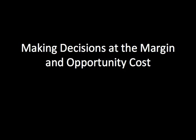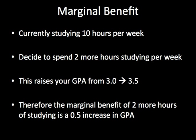Let's say that currently you're studying 10 hours per week and that you decide to spend 2 additional hours of studying per week. You realize a net effect on your grade point average is a 0.5 increase — let's say from 3.0 to 3.5. In this case we can say that the marginal benefit of studying 2 more hours a week is a 0.5 unit increase in GPA.